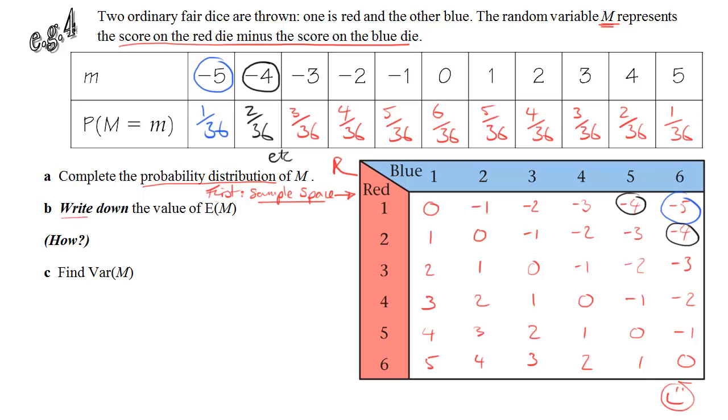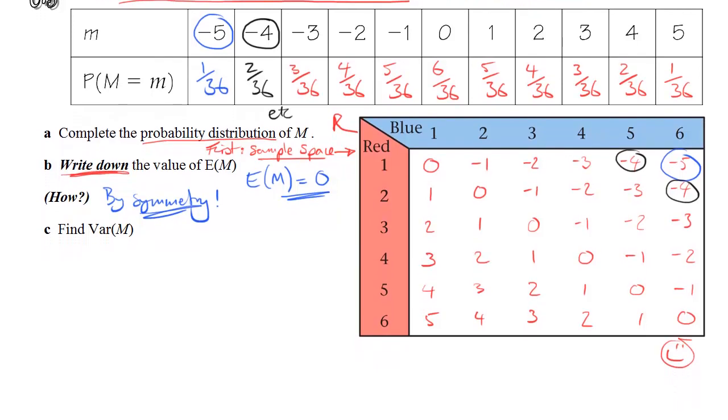Now, for part b, we're asked to write down the value of the expected value of m, E of m. That's a clue. Whenever you see write down, it means you shouldn't have to do anything too taxing. It's usually worth one mark. How can we do that when we know we have to multiply all these probabilities by their values? Well, actually we don't. Looking at the table, we can see that the expected value is zero. We know that because the table is beautifully symmetrical. The probabilities are symmetrical. The values are evenly distributed either side of zero. So, by symmetry, the expected value of m is zero.